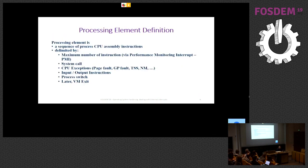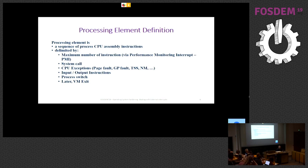The software to be protected is divided at one time into short processing elements. A processing element is a sequence of CPU instructions delimited by either a maximum number of instructions — detected by triggering the performance monitoring interrupt — or by system calls, CPU exceptions like page fault, general protection fault, or task state segment errors. The processing element also stops when there is an I/O instruction or a process switch.